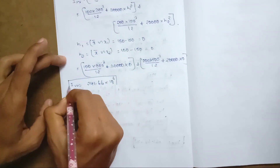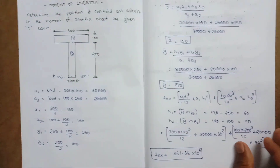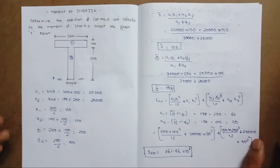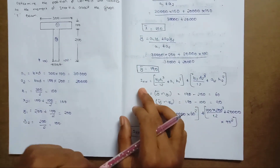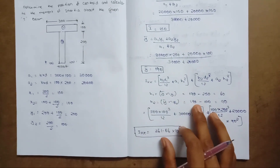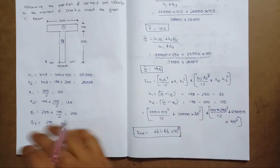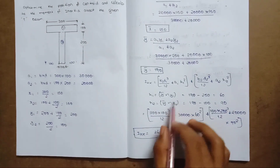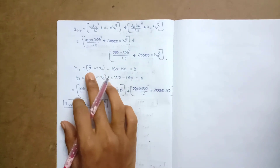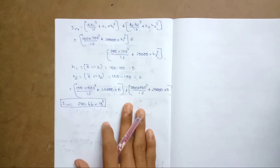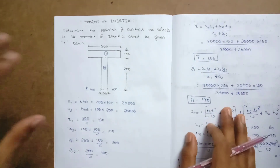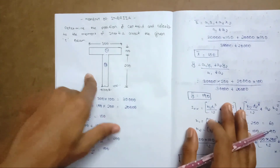Now we have calculated the moment of inertia for both rectangles — Ixx and Iyy. The centroid is located at the marks shown on the graphic. Thanks, friends.